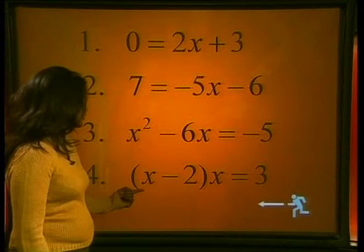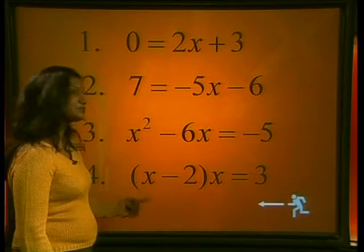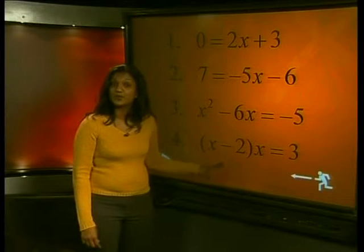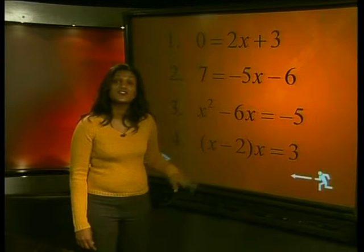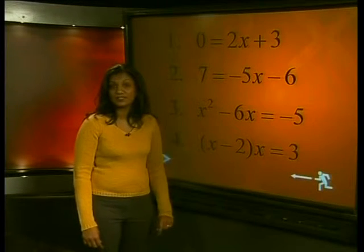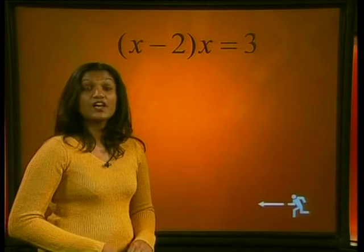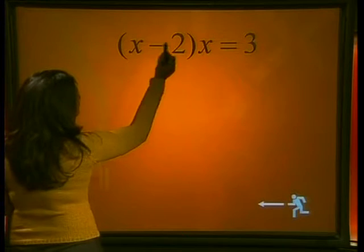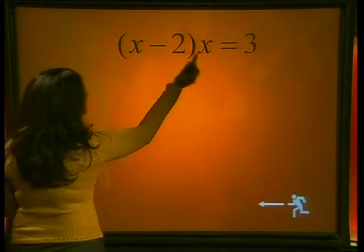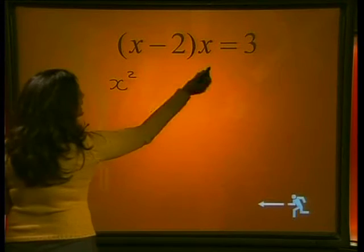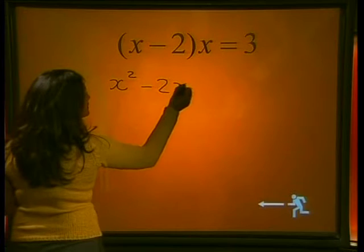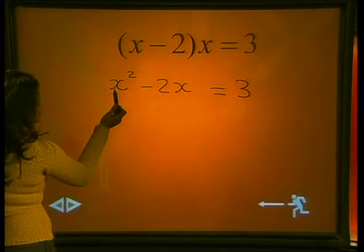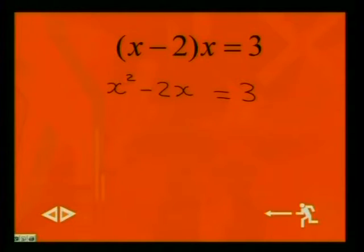What about the fourth equation — what power is the x raised to? The equation has not been multiplied out into its separate terms; we need to do this first before deciding what kind of equation it is. So let's multiply out each term. The x must be multiplied into each of the terms in the bracket. x times x gives x squared, and x times negative 2 gives negative 2x, equal to 3. So the power of x is indeed 2 — this is a quadratic equation.